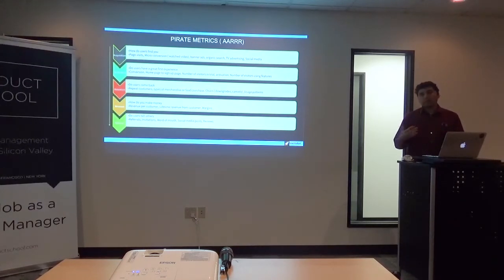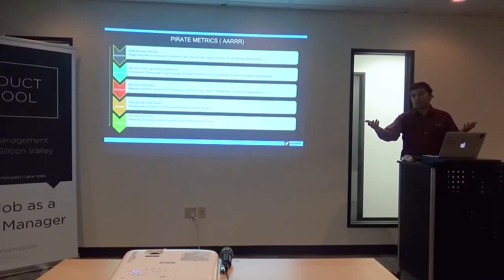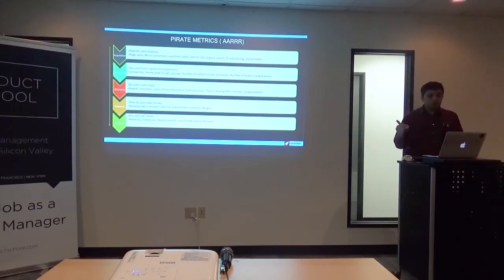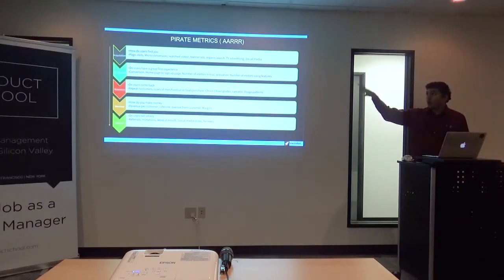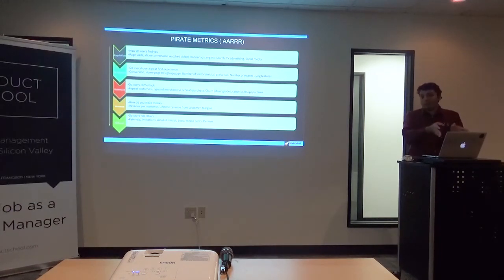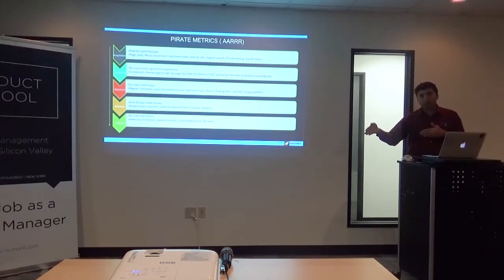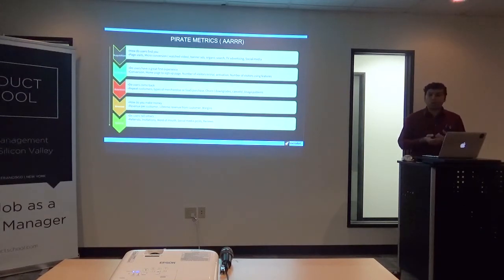The very last one is referral — do users tell others? This is word of mouth. For example, you get a coupon and can send it to a friend. You had a great experience and want to tell your friends — that's how your app grows virally. Metrics include number of referrals, invitations, word of mouth, and social media sharing. So all of this you can use as part of your product market fit. As you can see, there are literally around 20 metrics here. A good product manager will mix and match and look across the full funnel from acquisition, activation, retention, revenue, and to the referral process.